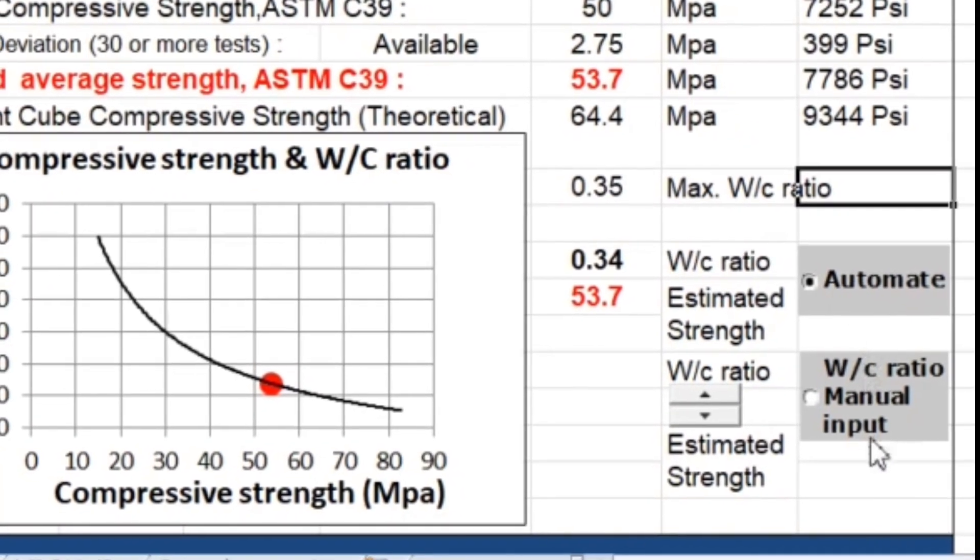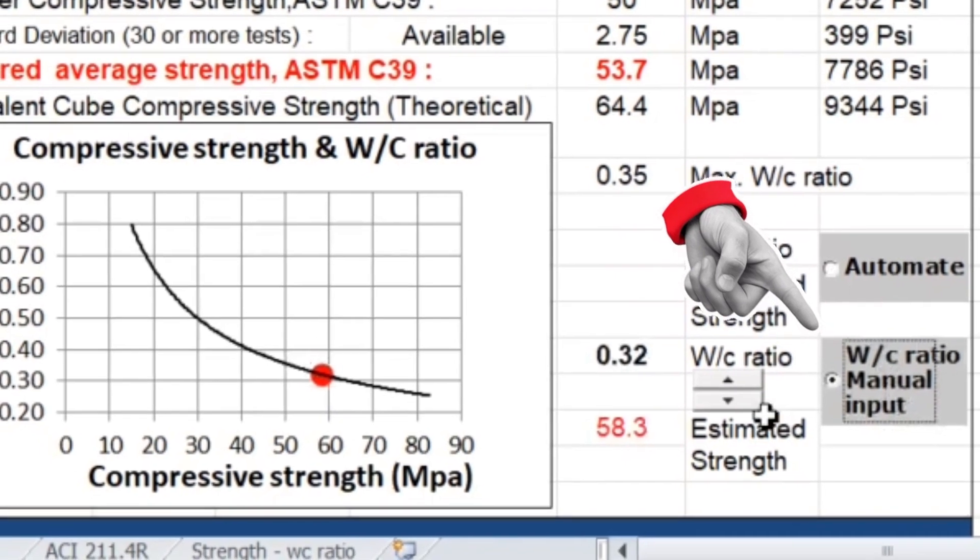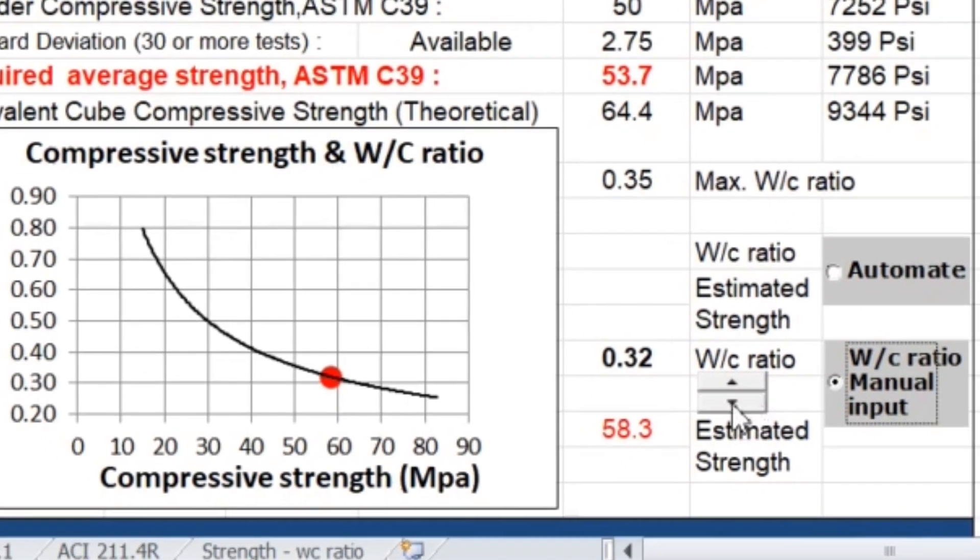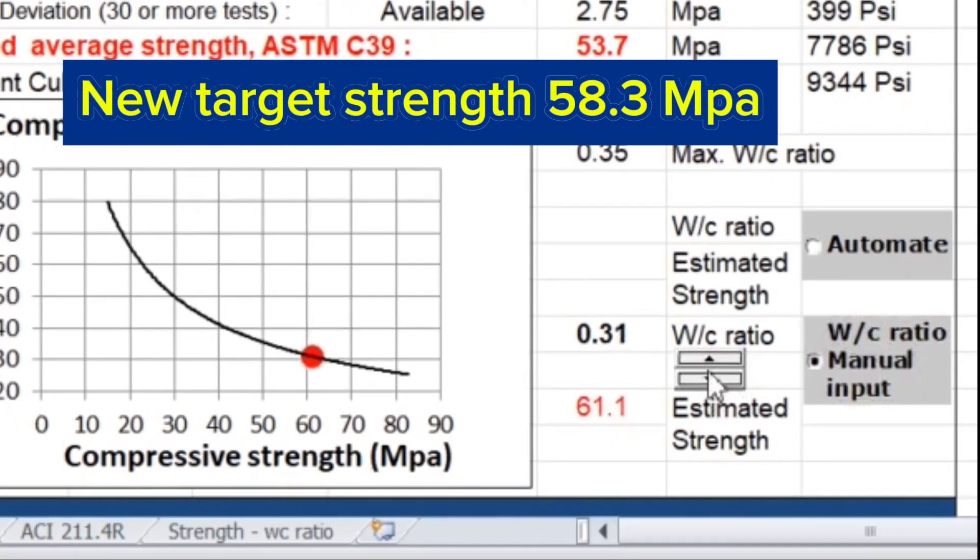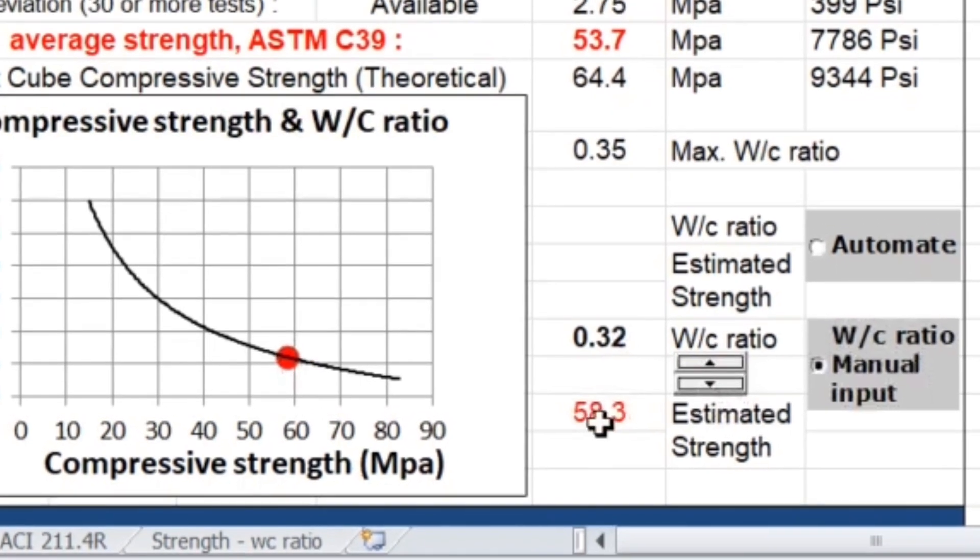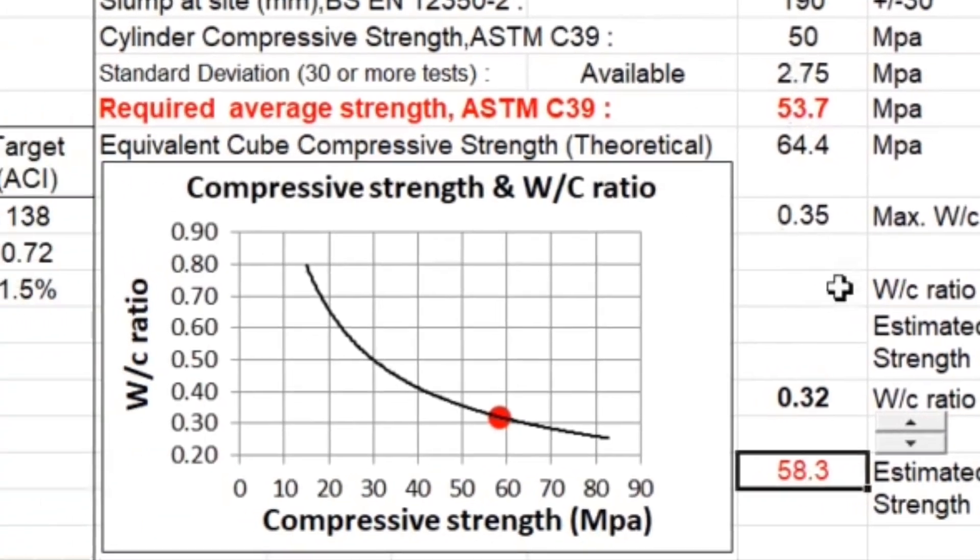Use the manual input. Press this button to reduce the water cement ratio to 0.32 with new target mean strength of 58.3 MPa. As a result, strength margin is 8.3 MPa from specified strength.